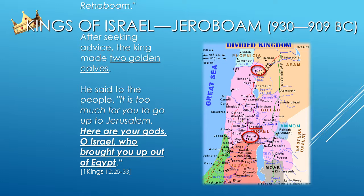Jeroboam did not abandon Yahweh worship — remember when we talked about syncretism? He didn't start a brand new religion. Who do these golden calves supposedly represent? Yahweh — the same God that brought them up out of the land of Egypt. Jeroboam is still worshiping Yahweh, sort of. He's just worshiping Yahweh on his own terms. This is very important. It's this corrupted form of Yahweh worship that eventually permeates the nation and leads Israel into the immoralities of heathenism and idol worship.